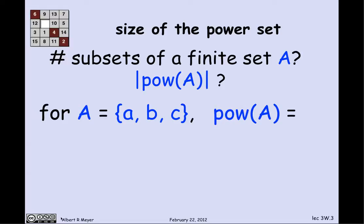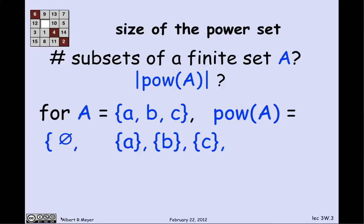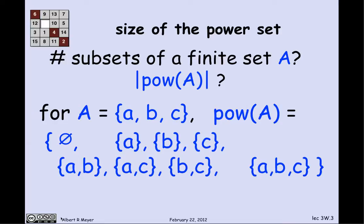If A has elements a, b, c — a set of size 3 — then the power set of A is going to have one subset with no elements, three subsets with one element, three more subsets with two elements, and one subset with three elements, for a total of eight subsets in the power set of A.